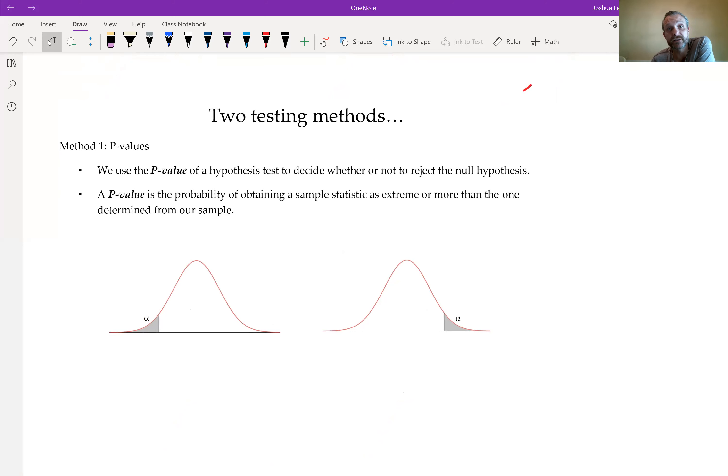Now we need to go get a simple random sample and decide if our results are actually significant at whatever that alpha is prescribed as. To do that, there are two different methods, and I will discuss those with you now. The first method is this method of P-values.